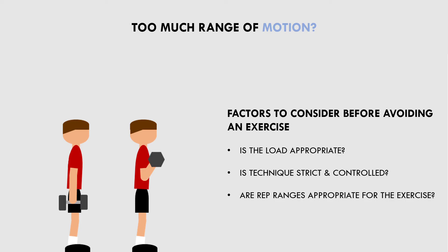For example, if we perform bicep curls for sets of 4-6 reps, we will probably develop some joint pain over time because the load required will place high stress on a single joint. So before concluding that full range of motion on bicep curls is going to cause you joint pain, first try increasing the rep ranges to around 10-20 reps, and therefore also drop the load.